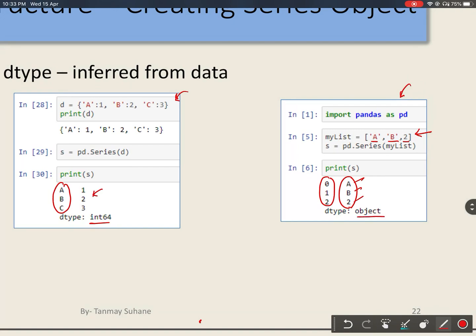That is why Python has automatically taken the data type of data as object. That means all the data are not of the same data type.